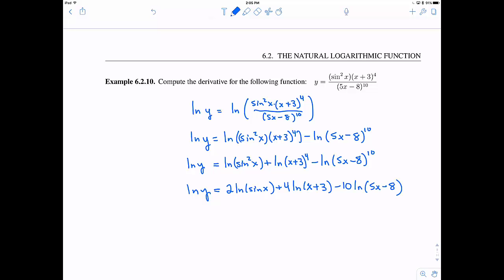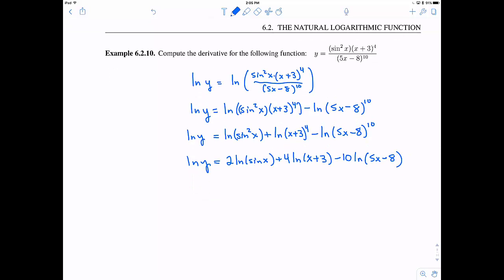And now, the claim is we can take the derivative of this, and it should be easier than it was. So let's go ahead and take the derivative, and we have to take the derivative implicitly. So we're taking the derivative with respect to x, so we have 1 over y, and then the derivative of y with respect to x, dy dx, or another way to write that is y prime.